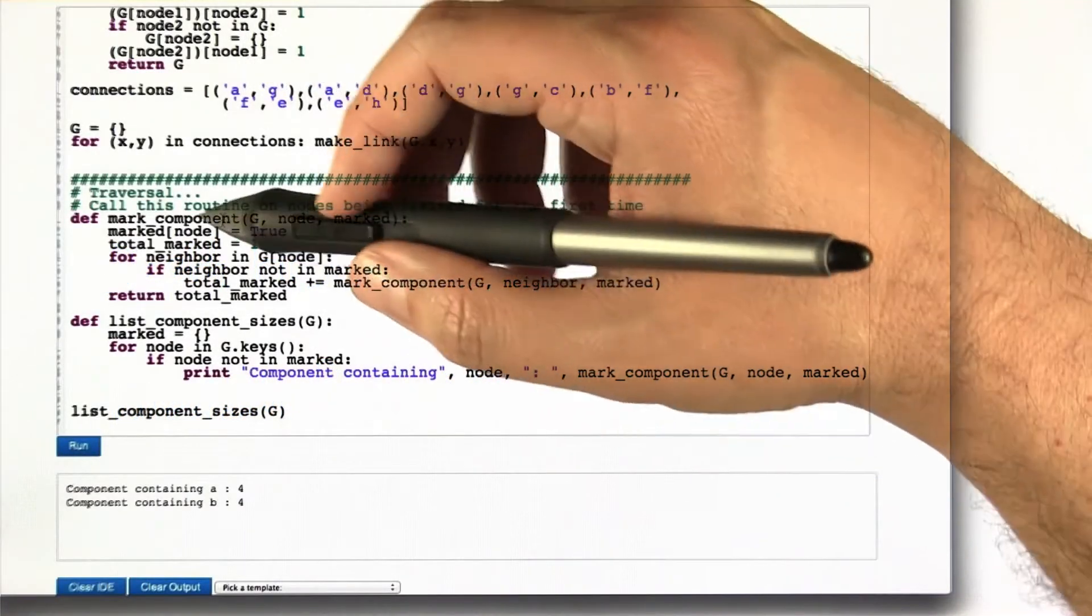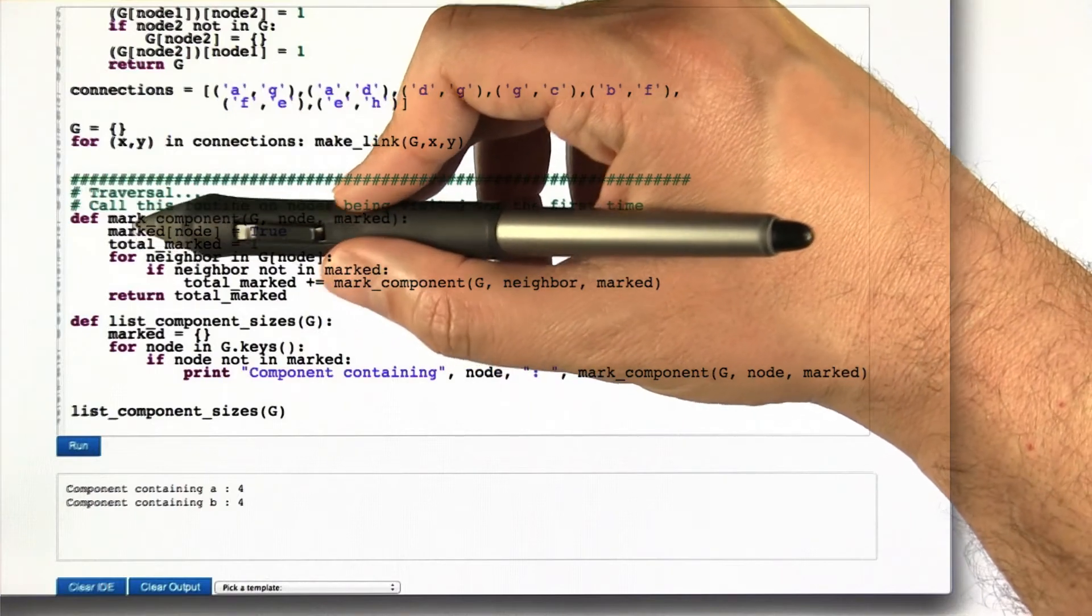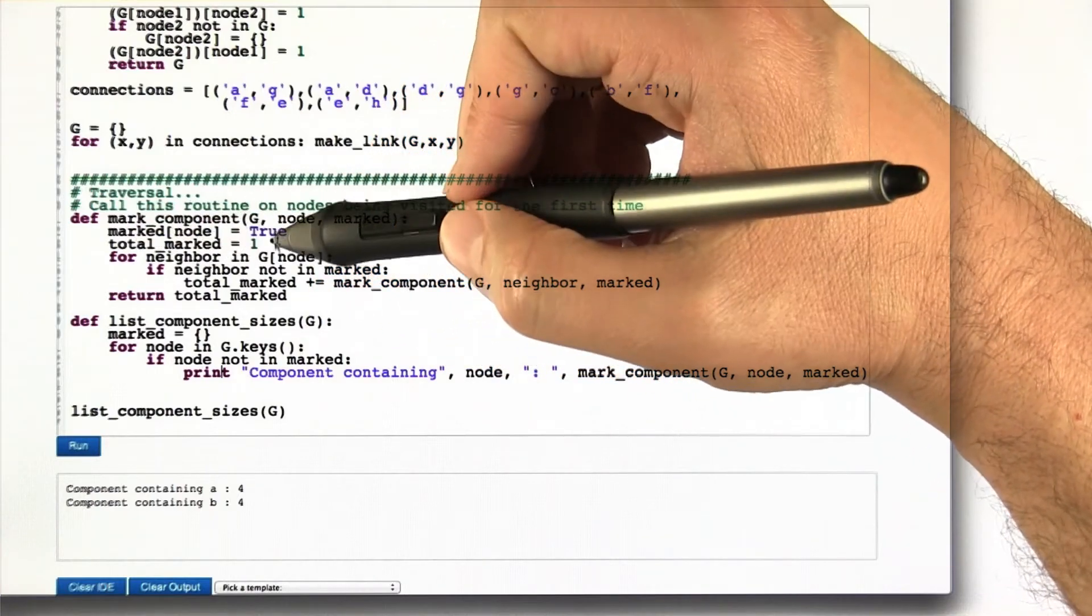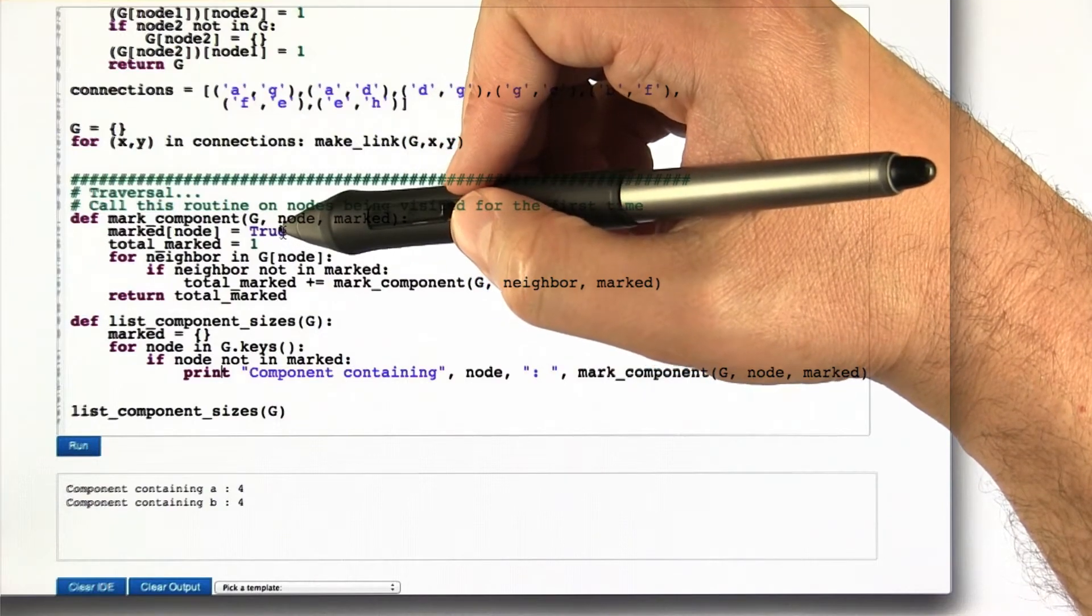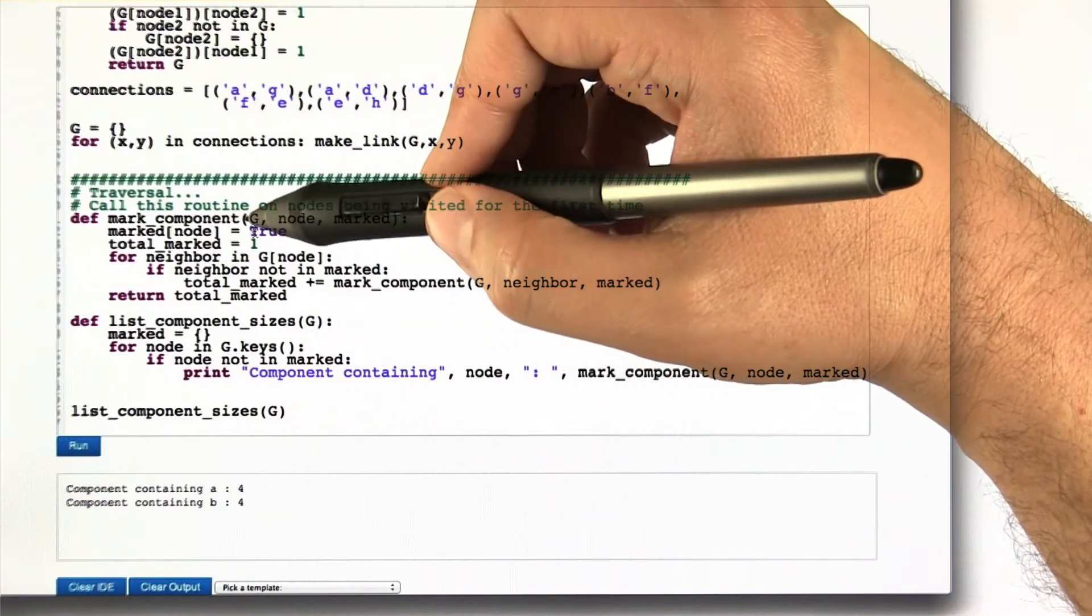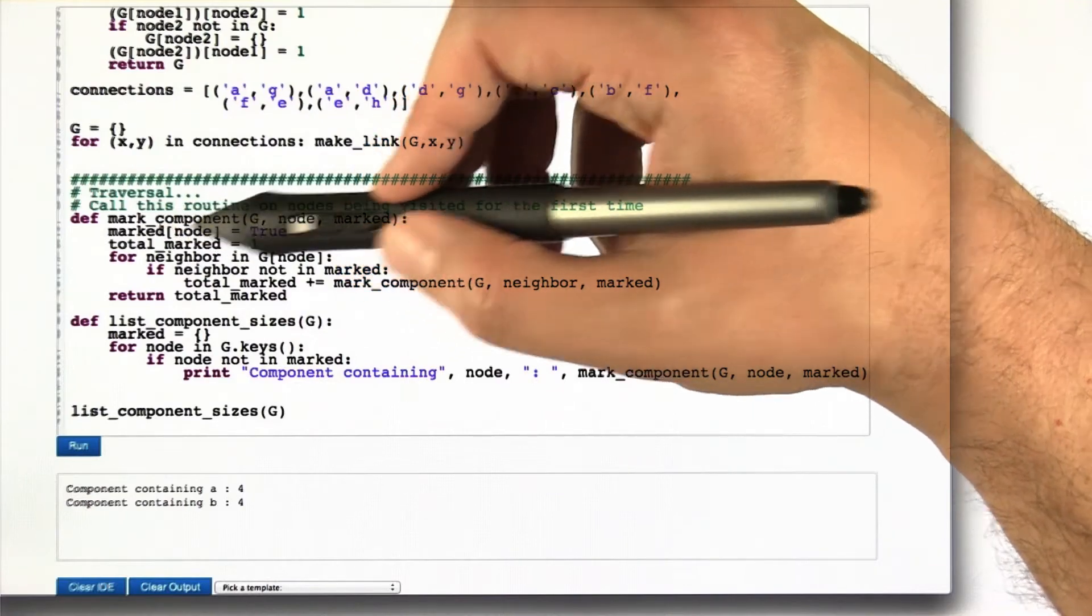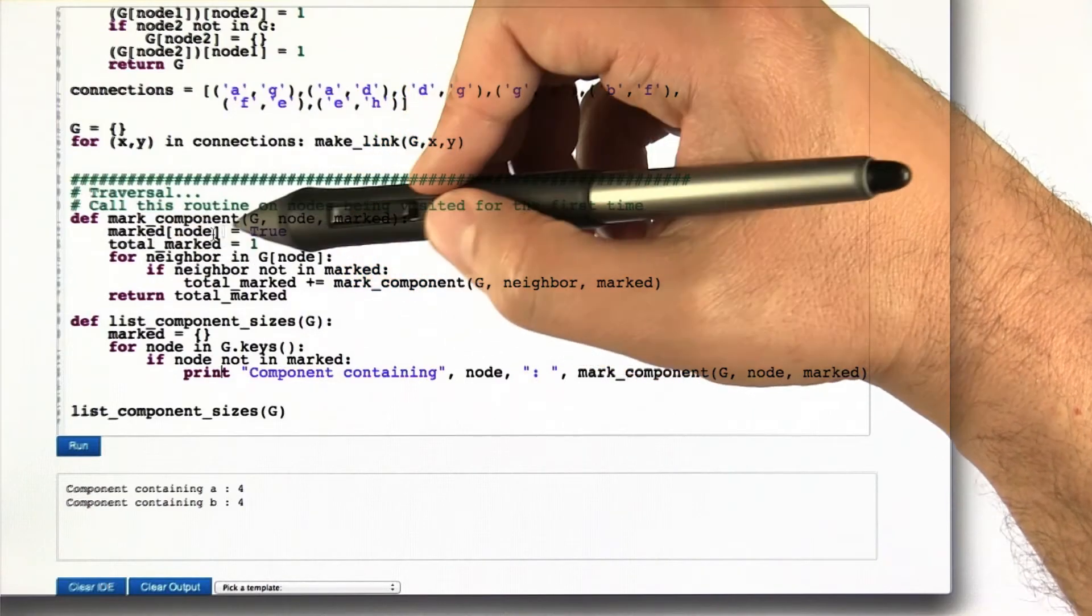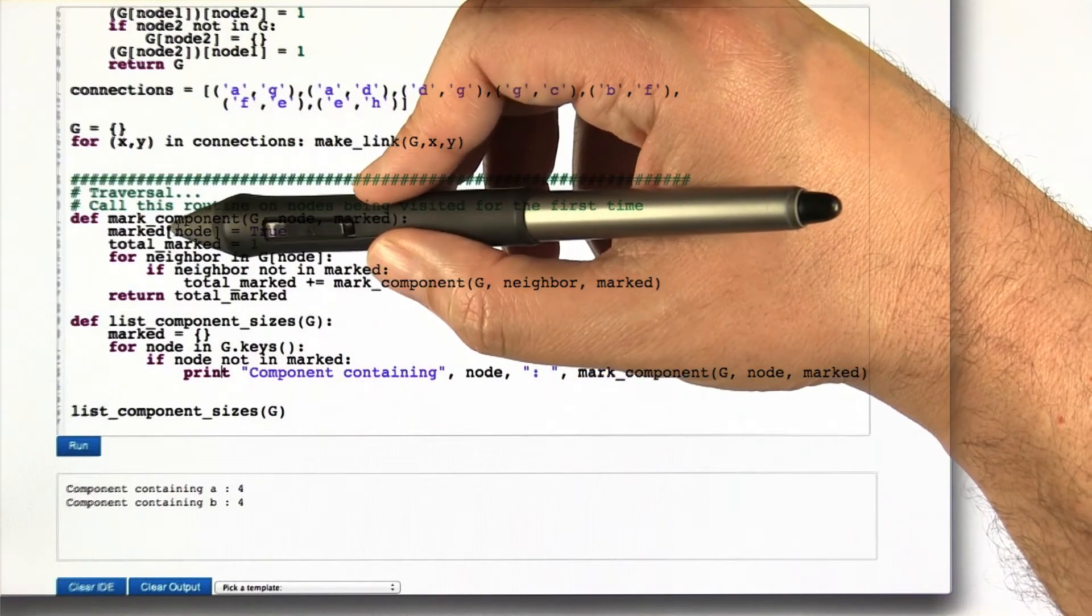Taking a look at this algorithm here, one of the things we can note right off the bat is statements like this one, marked node equals true, can only be executed once for each node in the graph. Even though it's a bit hard to tell exactly when this is going to execute, we know at the end of the day every node is going to get marked and no node is going to get marked twice.